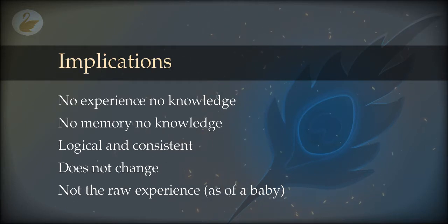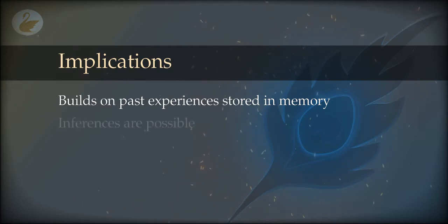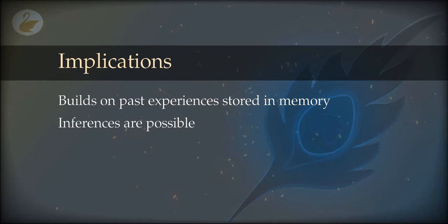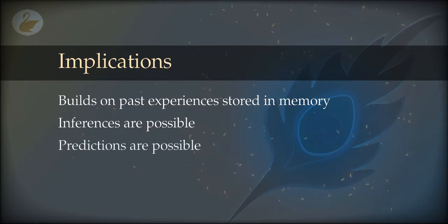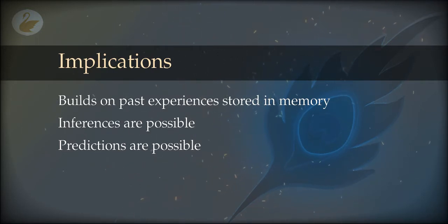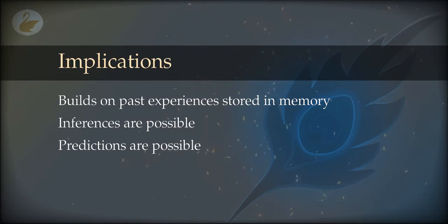We are not born with a full-fledged ability to know — it is acquired as we grow. Interestingly, knowledge builds on past knowledge. Previous knowledge can be used to acquire more knowledge, and it builds up very quickly because inferences and deductions are possible from what we already know. Even without direct experience, we can infer outcomes. This is the ability to predict — those without knowledge act blindly.